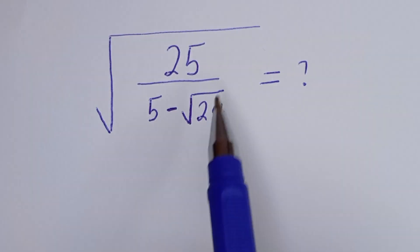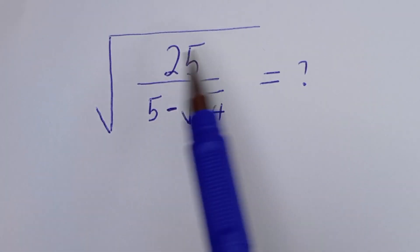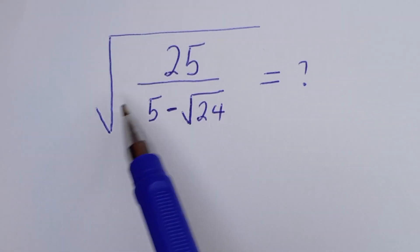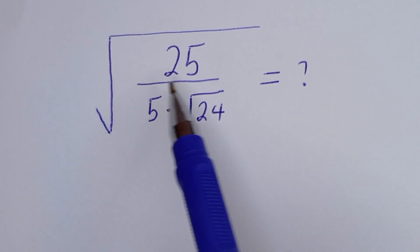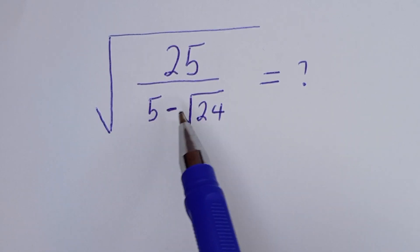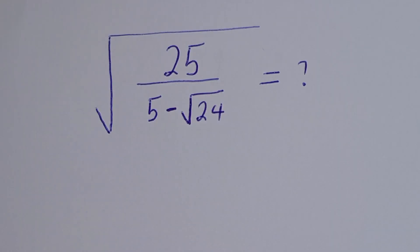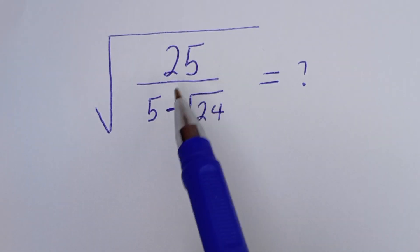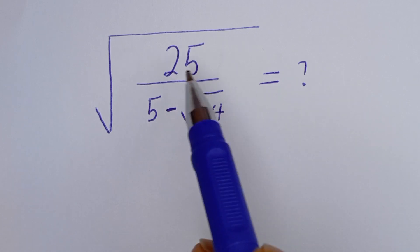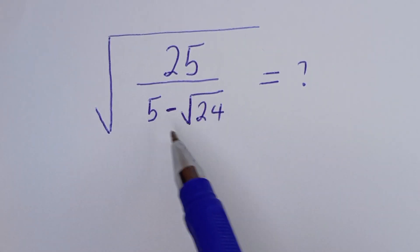Hello. How to simplify this nice math problem without using a calculator. We have square root of 25 divided by 5 minus square root of 24. In this case we are going to multiply both the numerator and denominator by the conjugate of this denominator.